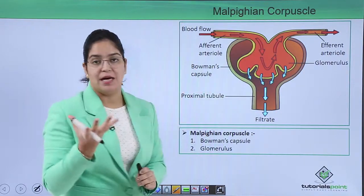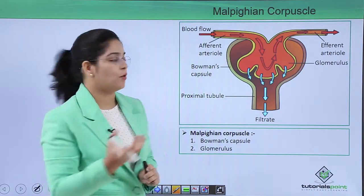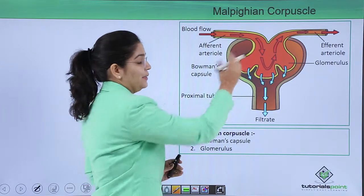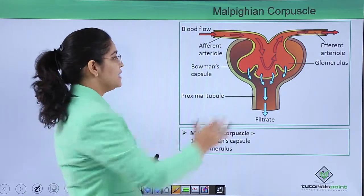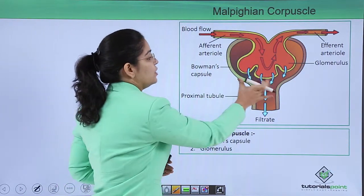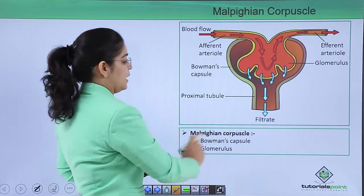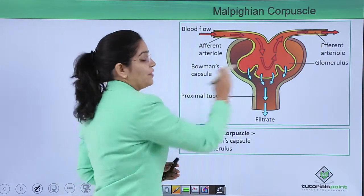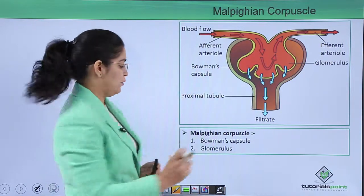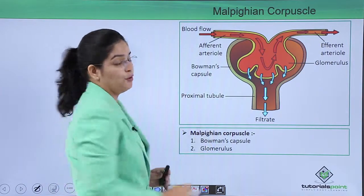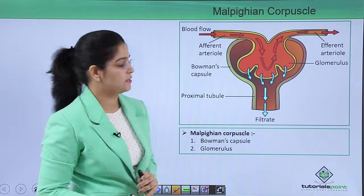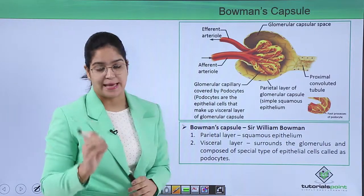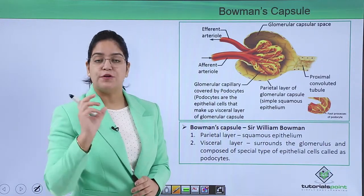This bowl is known as Bowman's capsule, and the tuft of capillaries inside it is known as the glomerulus. Let's first talk about Bowman's capsule.